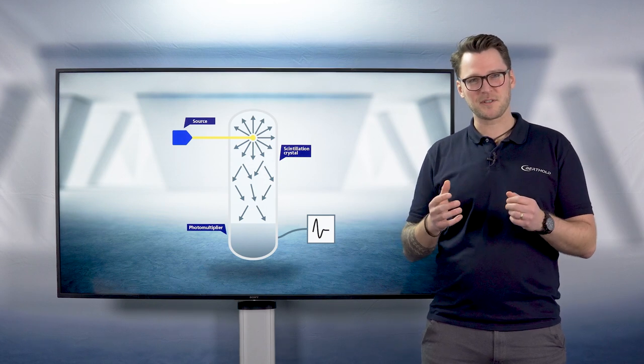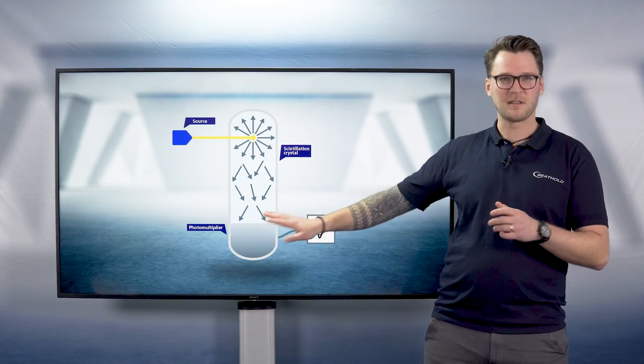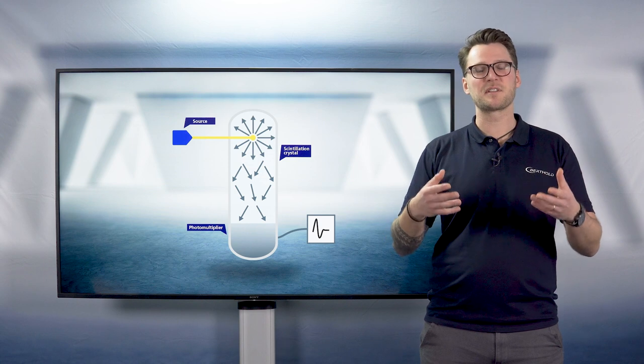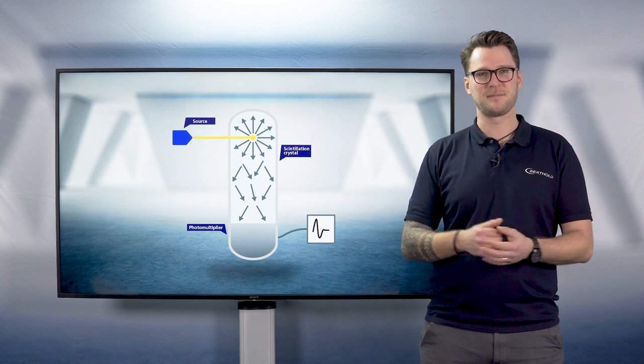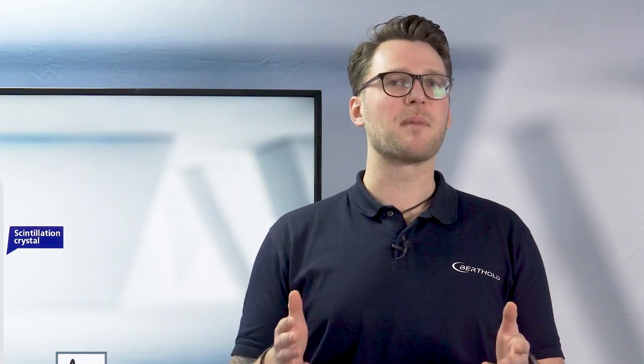Those light flashes knock out electrons at a photocathode at the top of the photomultiplier. Those electrons now get multiplied and converted into a measurable current. This electric current is dependent on the amount of incident radiation hitting the detector.